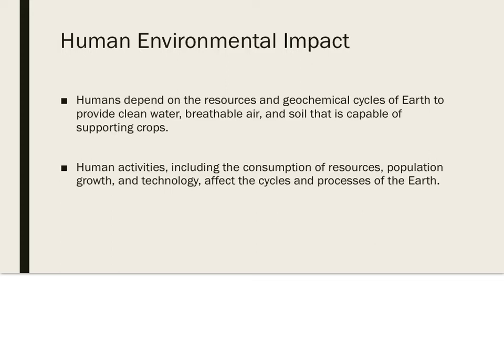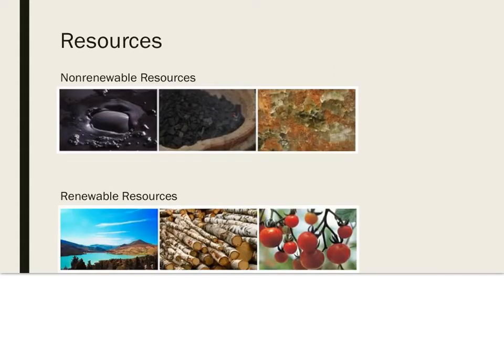We are going to talk about the human environmental impact. Humans depend on the resources and geochemical cycles of Earth to provide clean water, breathable air, and soil that is capable of supporting crops. Human activities, including the consumption of resources, population growth, and technology, affect the cycles and processes of the Earth.